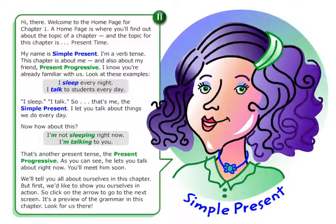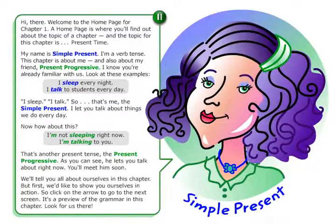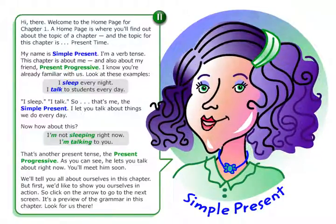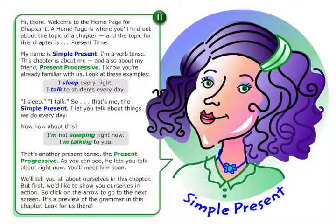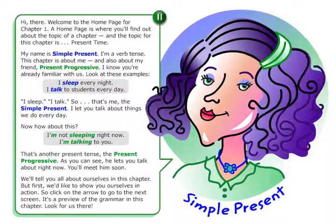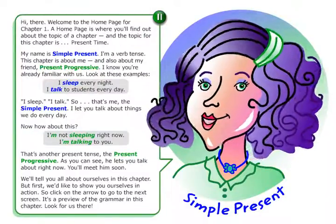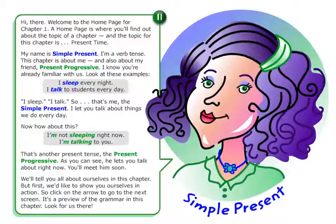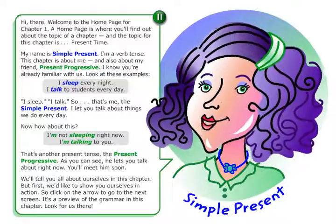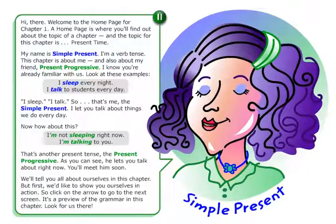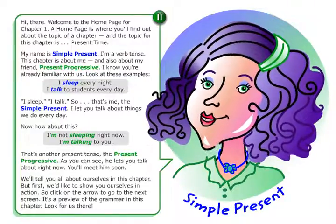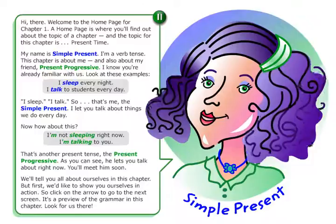My name is Simple Present. I'm a verb tense. This chapter is about me, and also about my friend, Present Progressive. I know you're already familiar with us. Look at these examples.